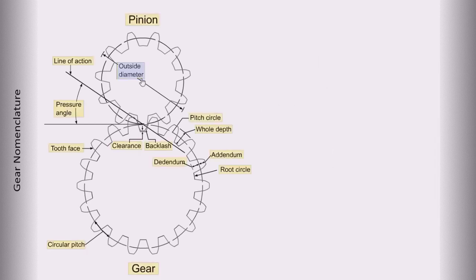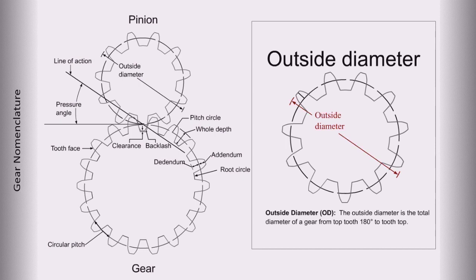Outside diameter. The outside diameter is the total diameter of a gear from the top tooth, 180 degrees, to tooth top.